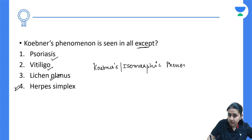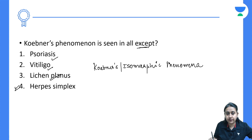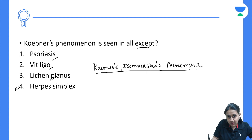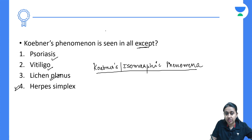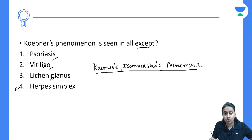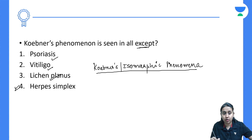As the name suggests, whenever there is trauma and at the site of that trauma you develop lesions of the same morphology — isomorphic — this is known as the isomorphic or Koebner's Phenomenon. It refers to the development of lesions with similar morphology at the site of trauma.